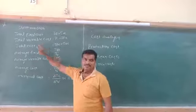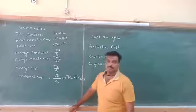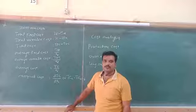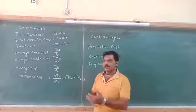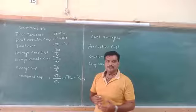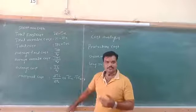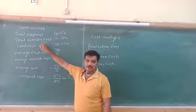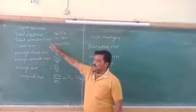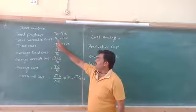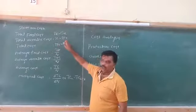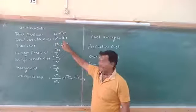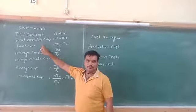The second type is Total Variable Cost. Total Variable Cost means those costs which vary — that is, which change according to the level of output. As the level of output increases, these costs also increase. When the output decreases, these costs also decrease. These are called Total Variable Cost. It can be determined by deducting Total Fixed Cost from Total Cost.